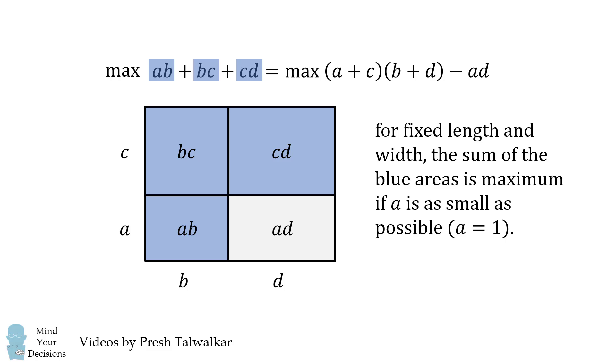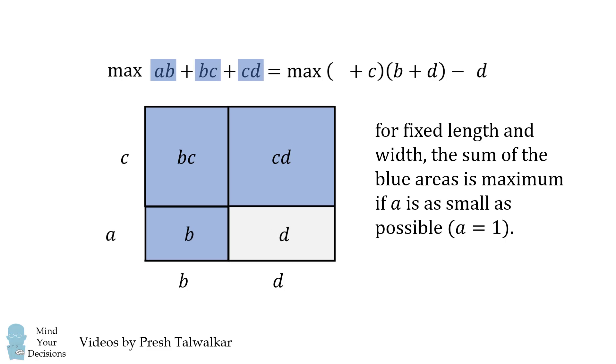All of the variables have to be positive integers, so the smallest positive integer will be A is equal to 1. Let's visualize why this is true.